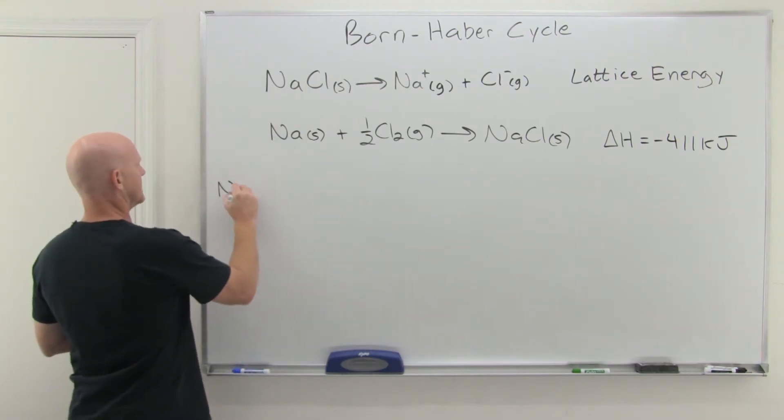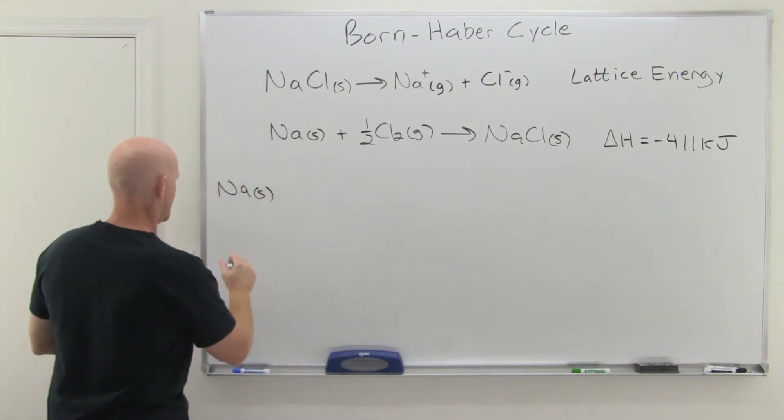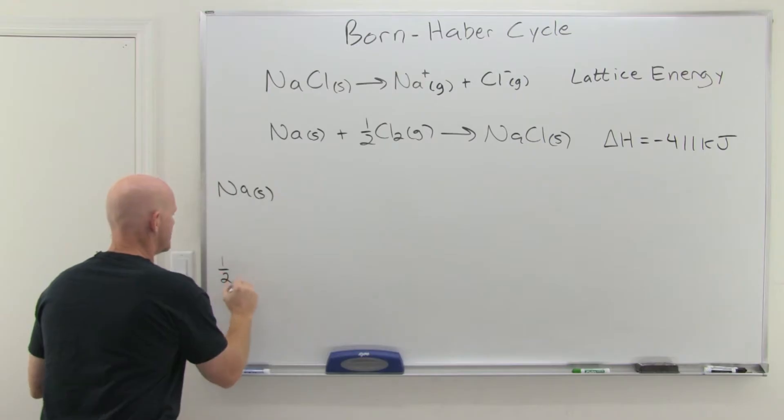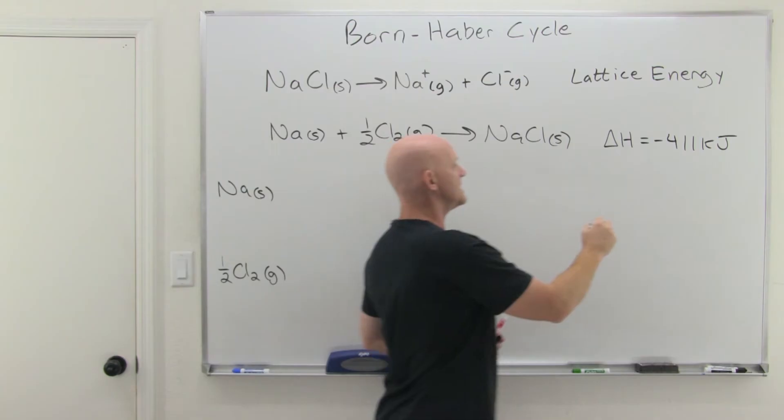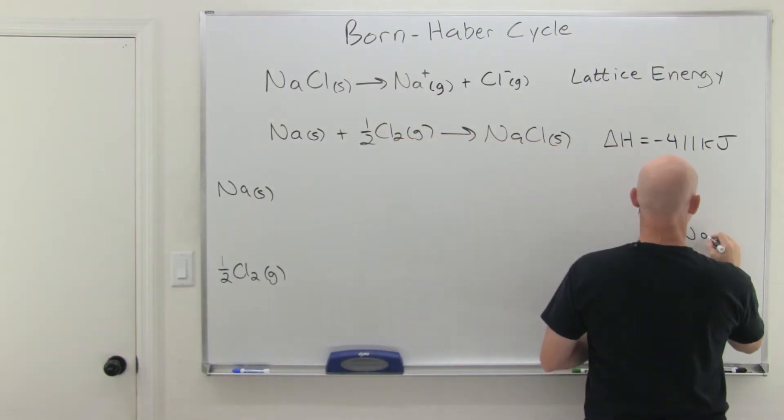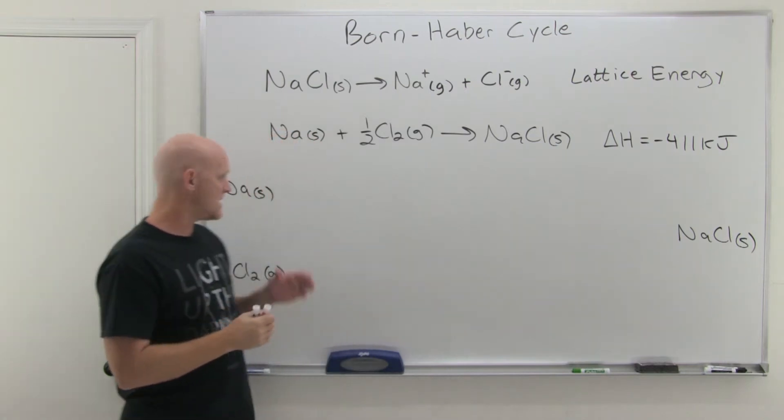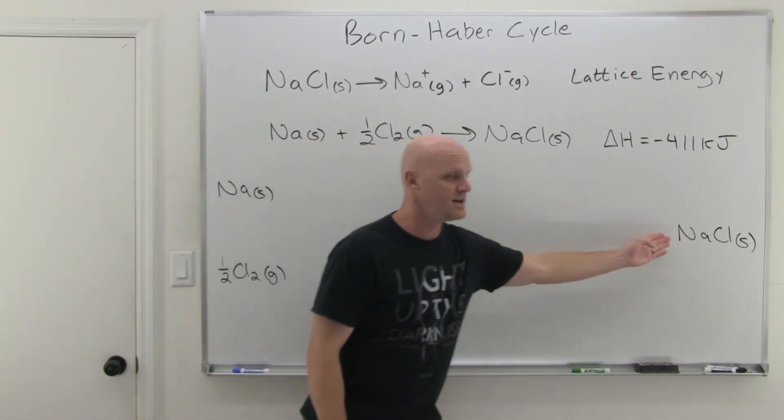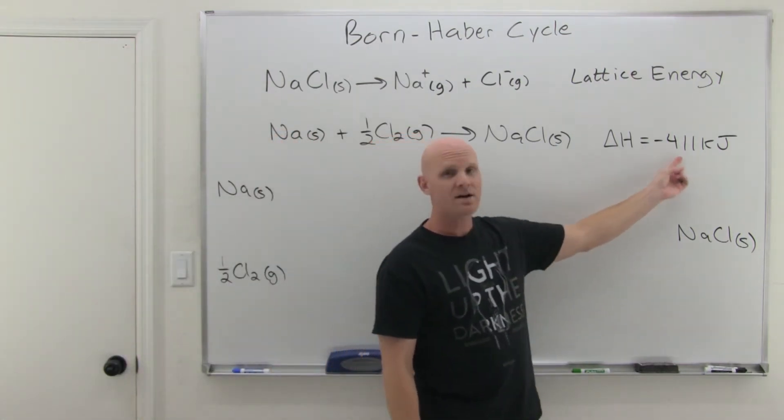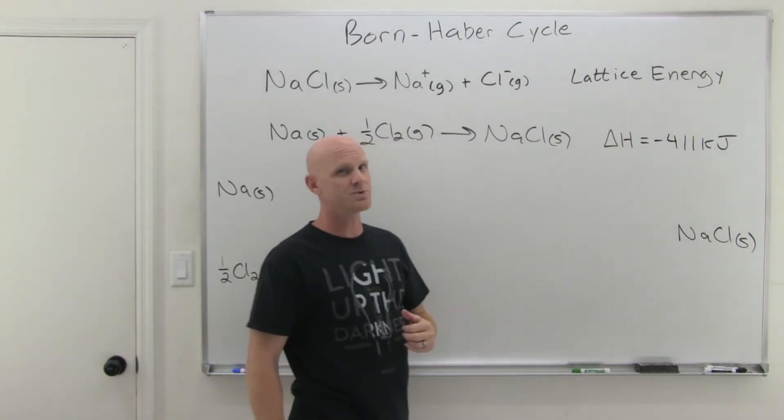So what we're going to do here is we're going to start with sodium metal, and we're going to start off with half a mole of Cl2 gas. And then in the end, we are going to make some NaCl solid. And so as long as we start here and end here, the delta H for that entire process is going to be negative 411 kilojoules.